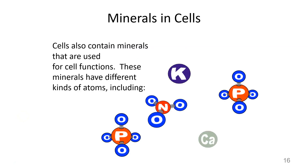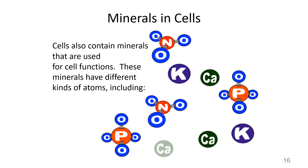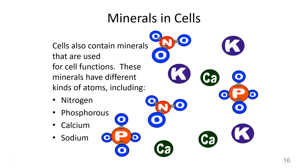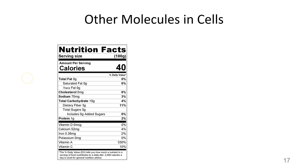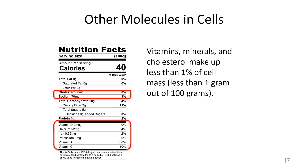Cells also contain other types of atoms. One really important type of compound found in cells is minerals — they help with all sorts of cell functions and have different kinds of atoms than carbon, hydrogen, oxygen, and nitrogen. They include things like phosphorus, calcium, and sodium. An important note: minerals make up a very small percentage of the cell. Vitamins, minerals, and cholesterol are measured in milligrams — thousandths of grams — and always make up less than 1% of the cell mass.